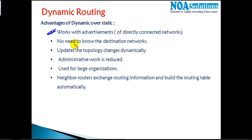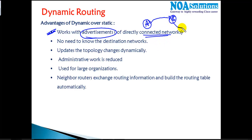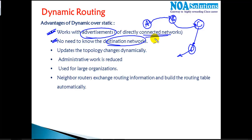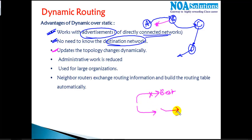To summarize the key points: dynamic routing works based on advertisements — every router advertises its own networks to its neighbors, which pass the information along. You don't need to worry about destination networks since you learn about them dynamically through routing protocols. Changes are updated dynamically: if you have two routes, the best one is selected, and if it fails, the second best is used automatically without administrator involvement.